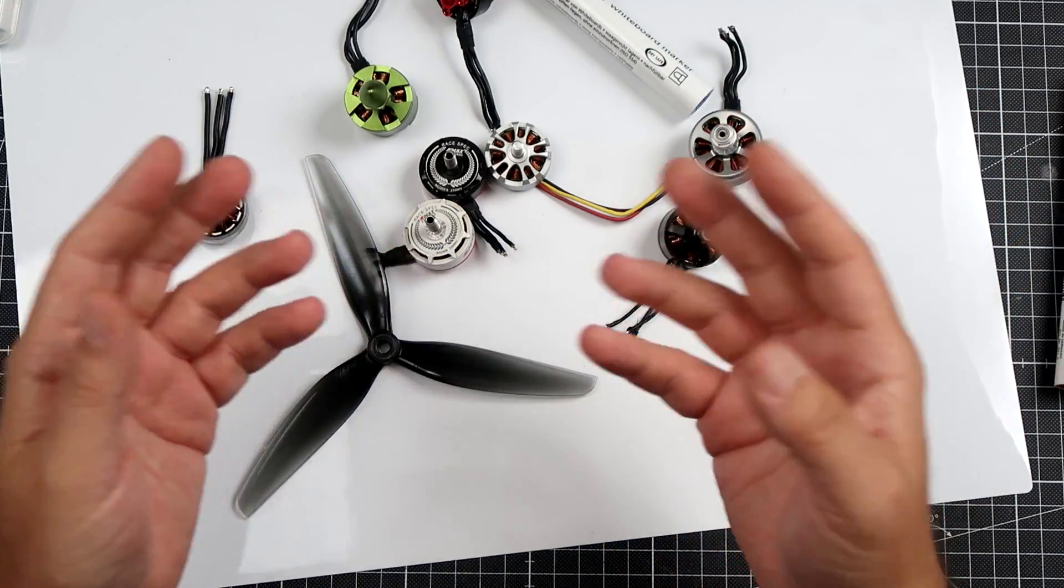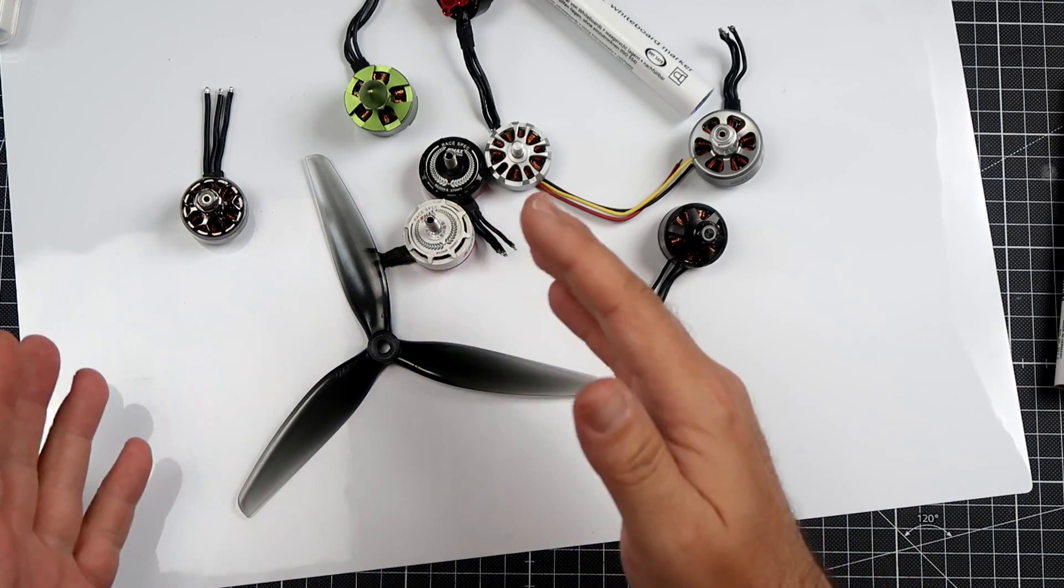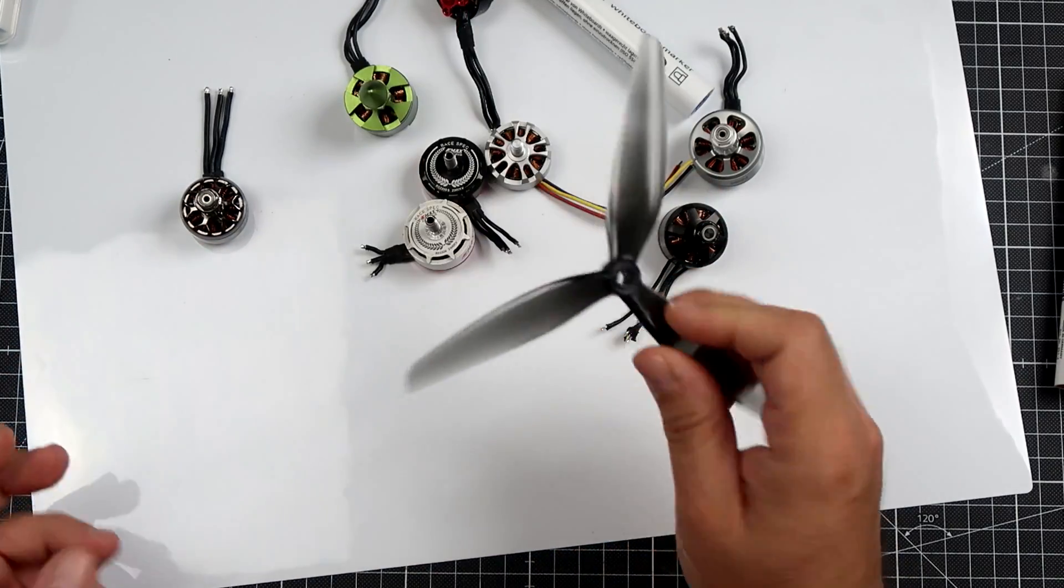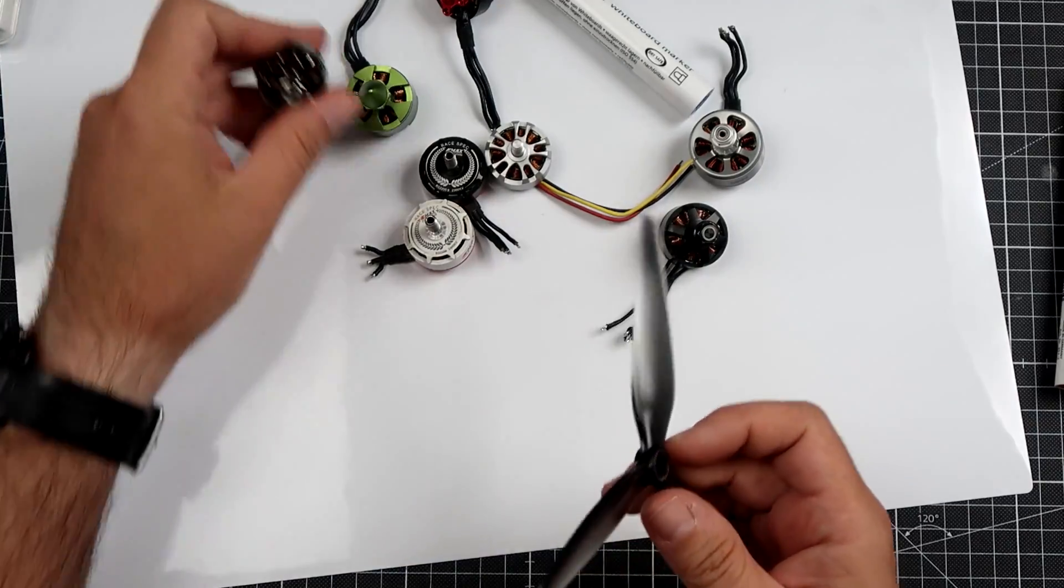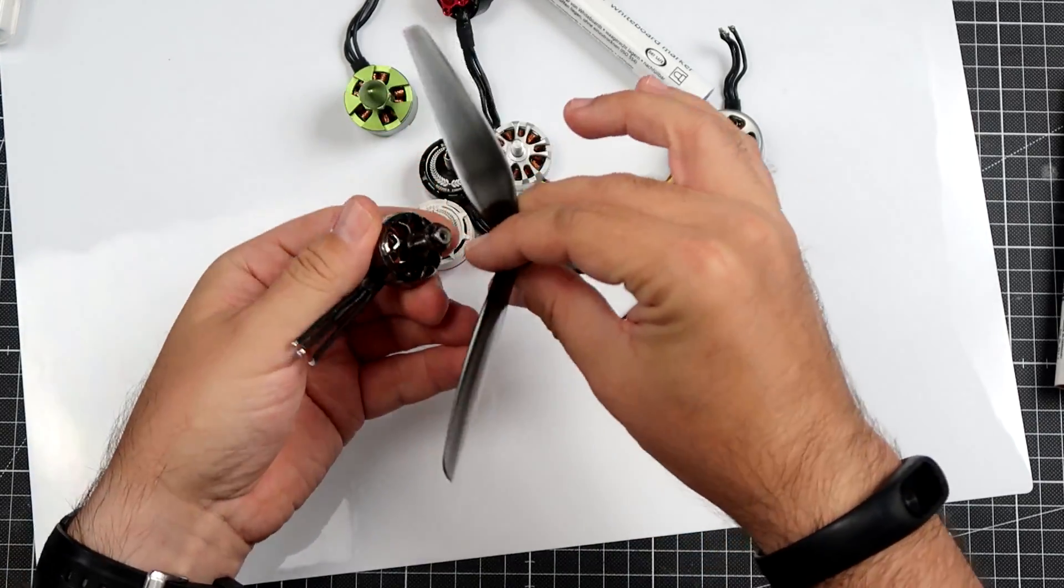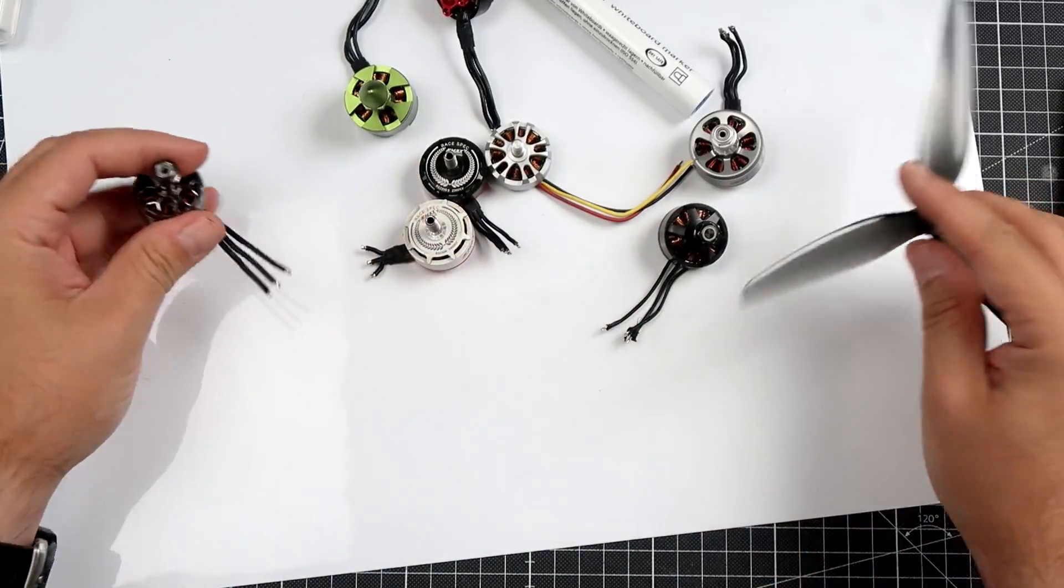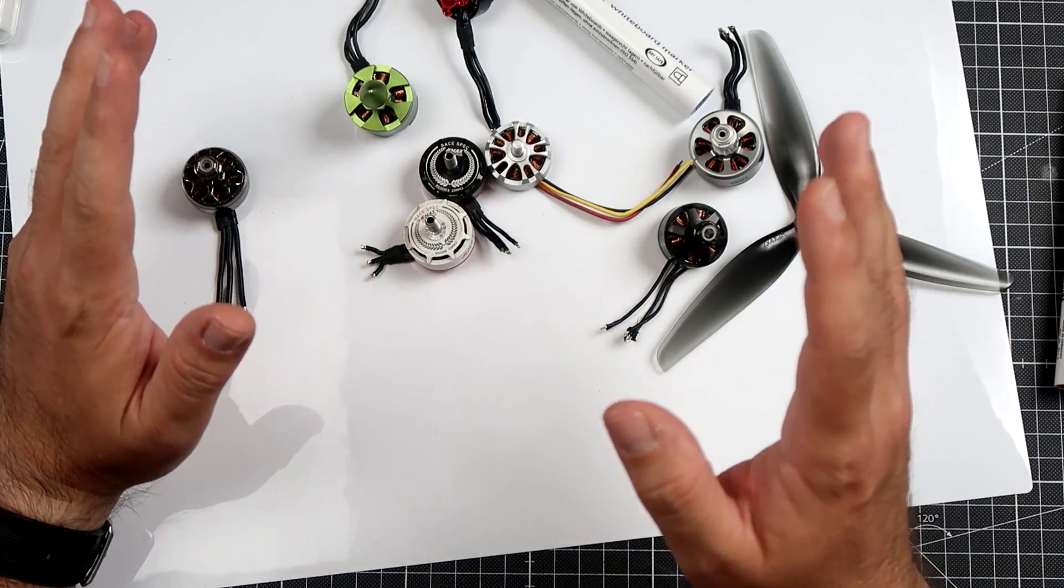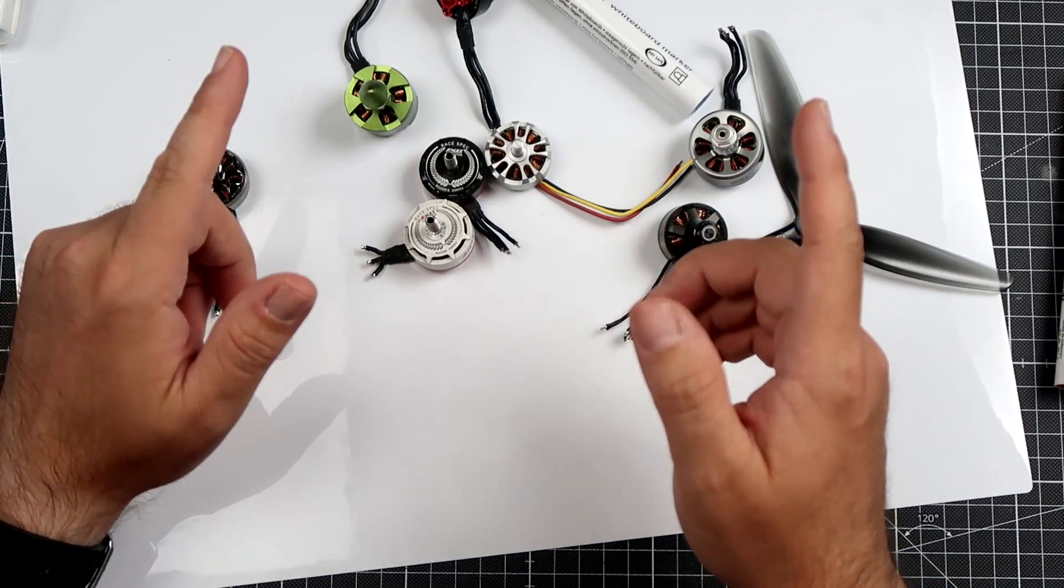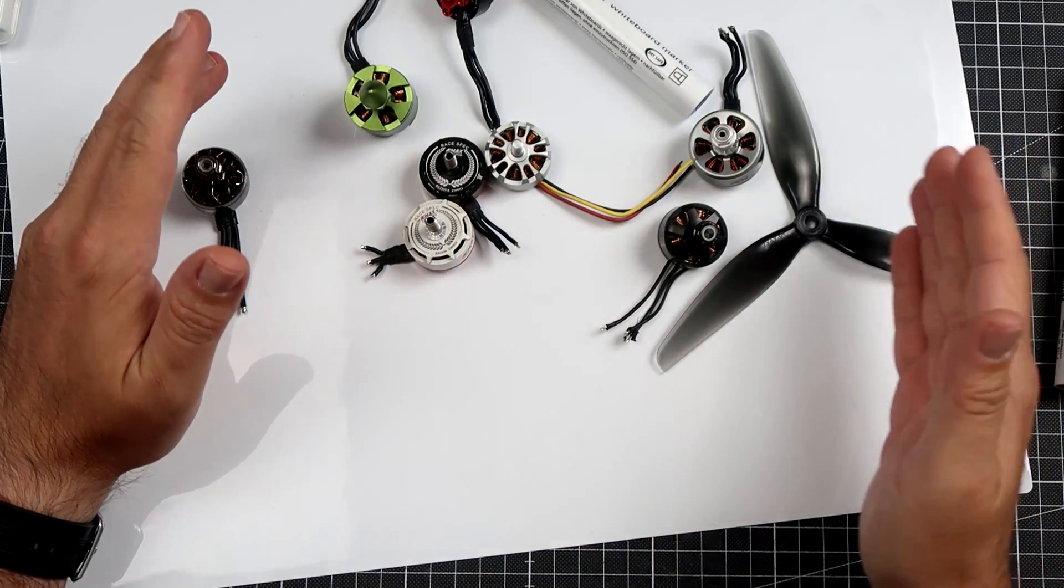Most people concentrate on the KV factor because everybody knows that with a bigger propeller like the seven-inch, you don't need as much KV. The rotation speed can be lower, and this is fine.